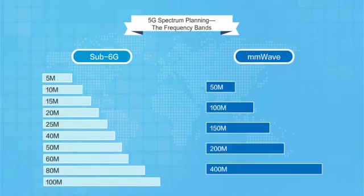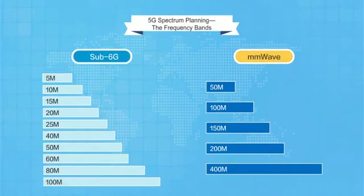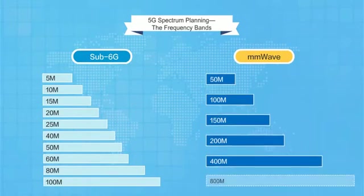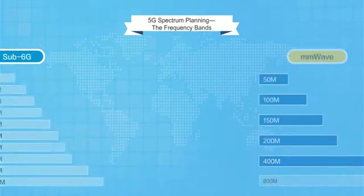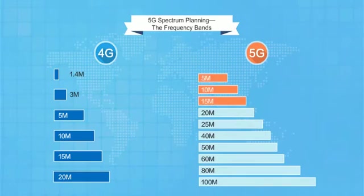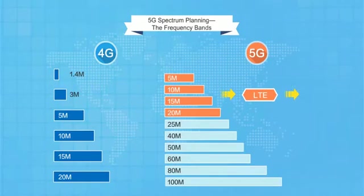The smallest carrier bandwidth allocated to any sub-6 GHz band is 5 MHz and the largest is 100 MHz. For the millimetre wave spectrum, in contrast, bandwidth ranges from 50 MHz all the way up to 400 MHz. When 3GPP Release 16 comes out, there may even be an 800 MHz carrier bandwidth available. There will not be 1.4 MHz or 3 MHz bandwidths, mainly because one of the main selling points of 5G is wide bandwidth. There are already 5 MHz, 10 MHz, 15 MHz, and 20 MHz LTE carrier bandwidths reserved for 5G.